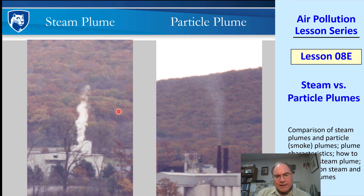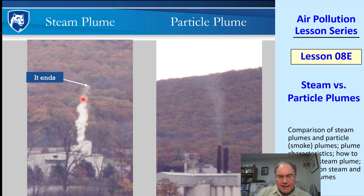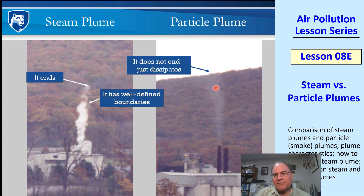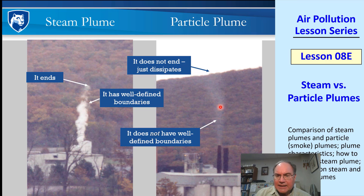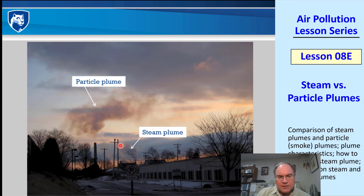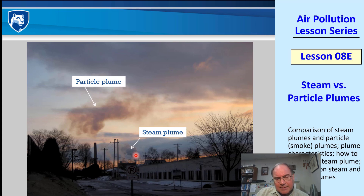Here are two pictures I took one day while driving. The one on the left is a steam plume — it's white, has very well-defined boundaries, and it just ends. The particle plume, however, is very fuzzy, doesn't have well-defined boundaries, and just doesn't end. With my eyes I could clearly see that the particle plume went on forever. Here's Penn State's old steam plant — sometimes there would be rips in the bag house, and I would see this brown particle plume that just kind of went on forever. There's also a steam plume from a different part of the plant in the same picture.